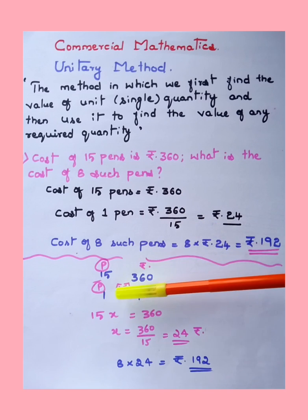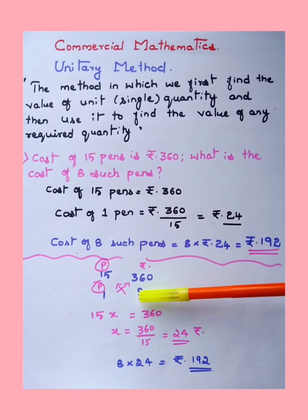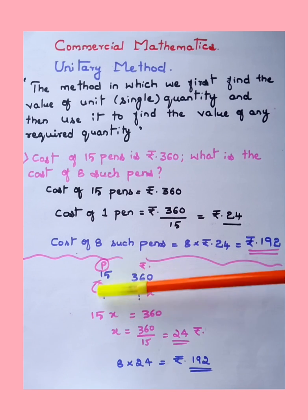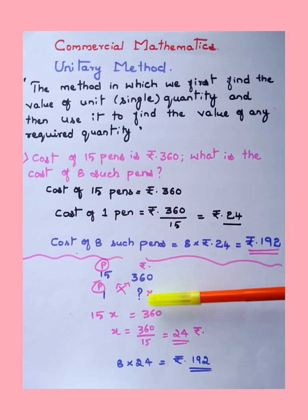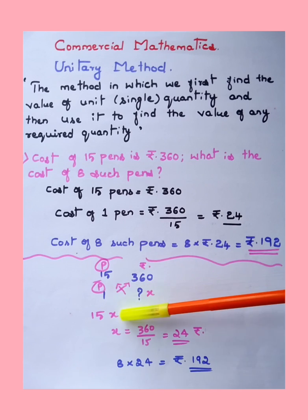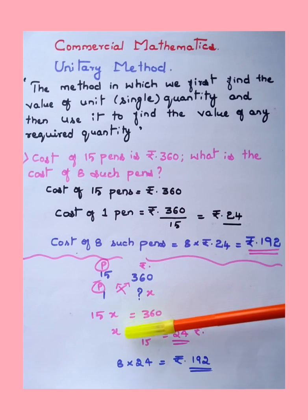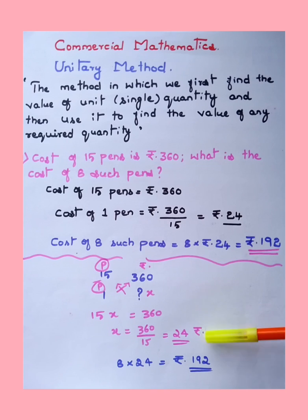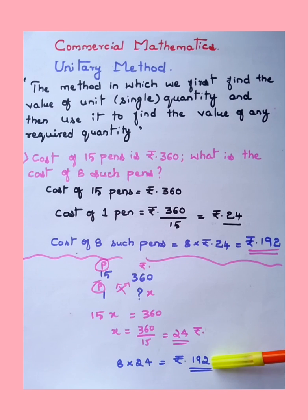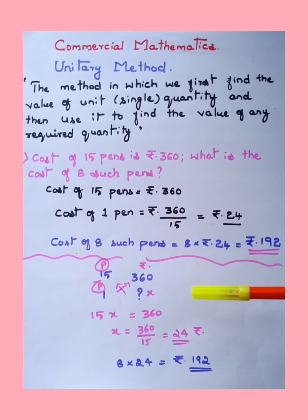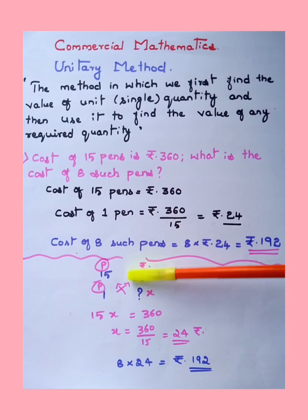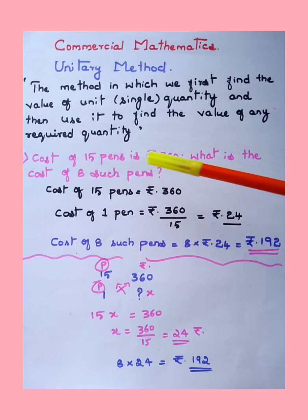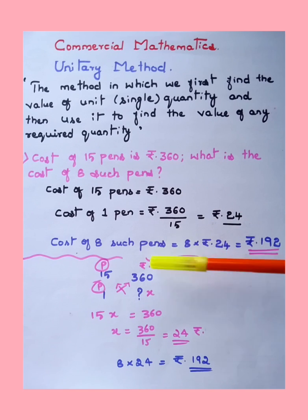We can calculate the cost of one pen first. Write below the pen column: for one pen, cost = x (question mark). Cross multiply: 15 × x = 1 × 360, so x = 360 ÷ 15 = 24. This is the cost of one pen. Therefore cost of 8 pens = 8 × 24 = rupees 192. You can skip intermediate steps once you are comfortable and directly calculate the answer.